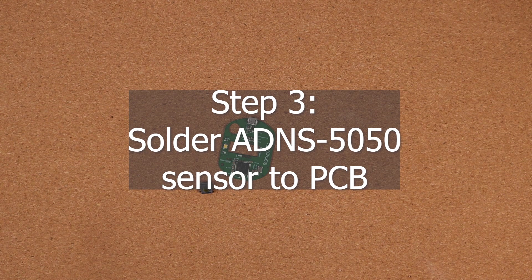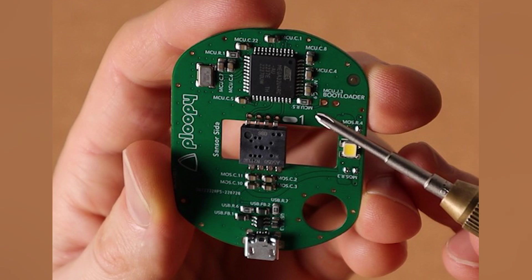Step three is to solder the ADNS 5050 sensor to the PCB. Make sure it's oriented correctly before you solder it. It's really easy to mess up. There are two little dots on one corner. This denotes pin 1.